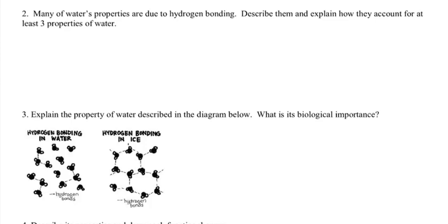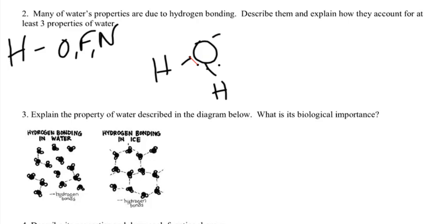Alright, many of water's properties are due to hydrogen bonding. Describe them and how they account for at least three properties of water. So when you hear the words hydrogen bonding, you want to think it's an H attracted to an O, an F, or an N. So if you have a water molecule, here's the O, here's the two H's. The electrons are not shared equally. They are closer to the O, which makes the O have an overall negative charge and the hydrogens have a slightly positive charge.